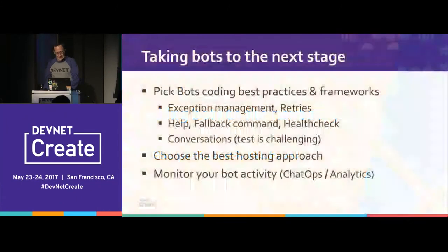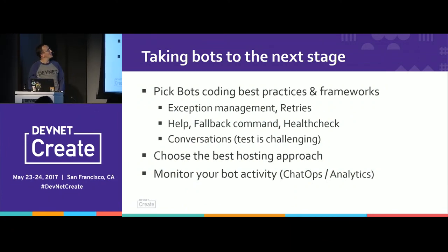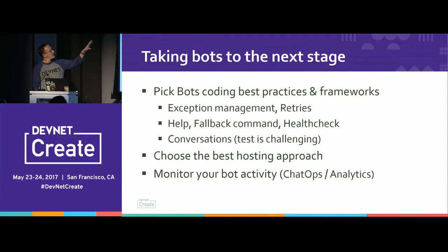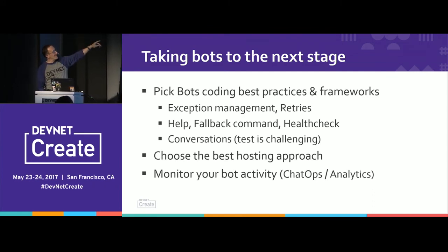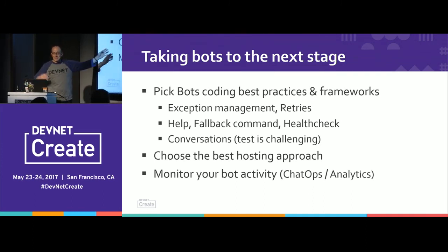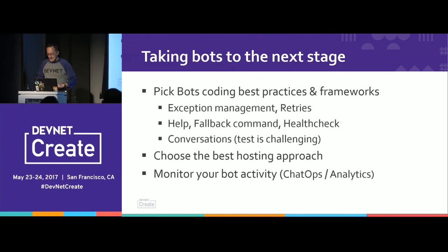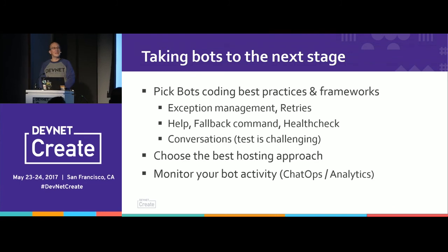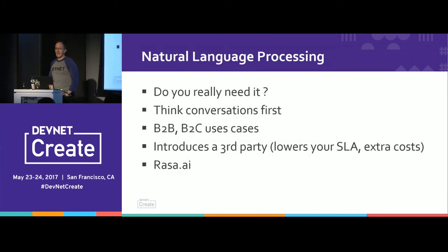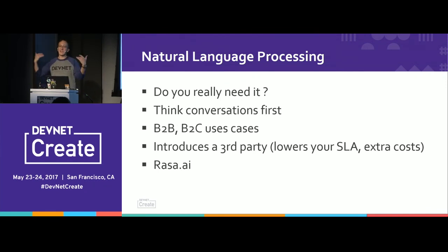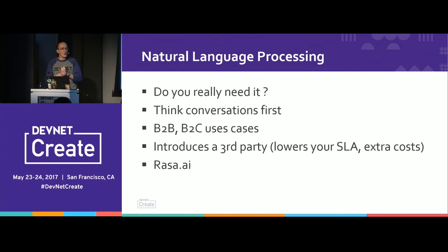To wrap it up: pick the right bot framework, add your fallback commands, think about conversations. Testing is really challenging — there are some testing frameworks coming. Choose the best hosting approach, challenge yourself, or even host it internally — but nobody's ready to pay for that yet. Monitor your bot activity — there are some bot frameworks that do bot analytics, and Google recently proposed a Google Analytics extension that works for bots. For the last part: natural language processing. I showed you how to create a conversation and store user context — we can go pretty far when we interact with users without NLP.